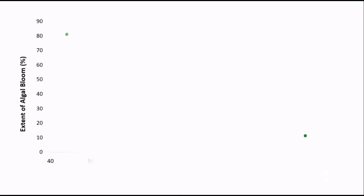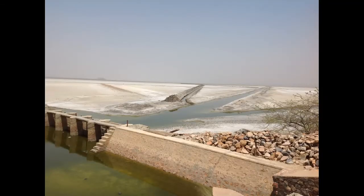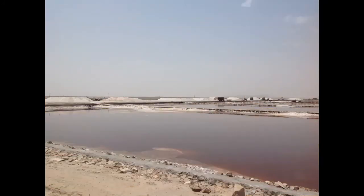The extent of water body with respect to the lake boundary and algal bloom in the lake water is shown in the graph chart, where it is clearly shown that an increase in algal bloom is observed with the decrease in the extent of water body. Sambur Lake, being declared as a wetland according to the Ramsar Convention, is necessary to protect and conserve for its ecological importance.